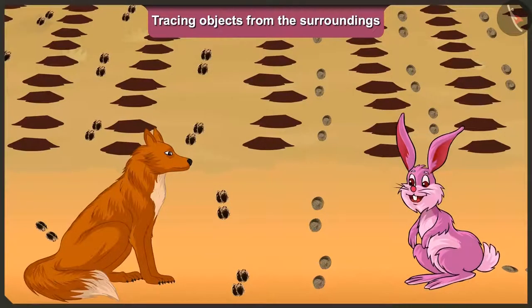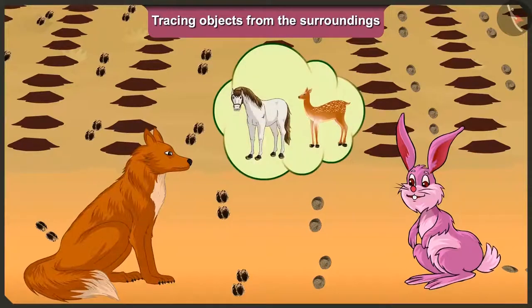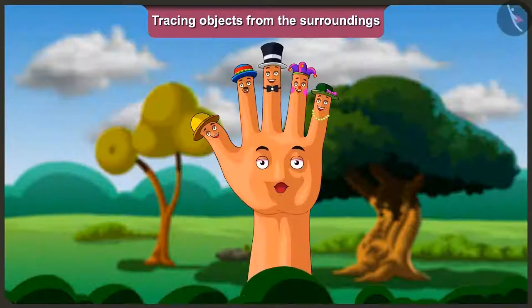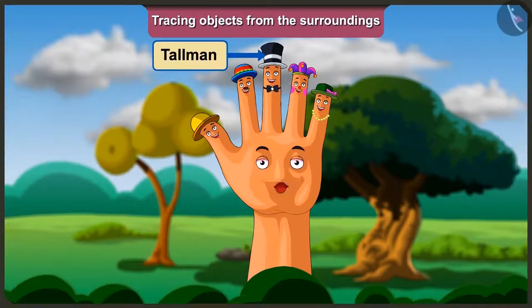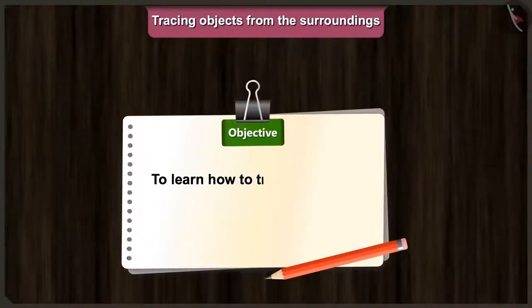"Oh, so these two have taken away all the carrots from my farm." See friends, the fox identified who came to the rabbit's farm only by looking at the traces of the feet. Friends, we can also identify the objects in our surroundings by tracing them. So, let's learn tracing objects from the surroundings with the help of Tallman and Thumpkin.